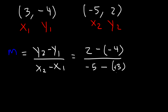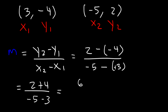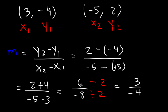2 minus negative 4 is the same as 2 plus 4. Negative 5 minus positive 3 is the same as negative 5 minus 3. 2 plus 4 is 6. Negative 5 minus 3 is negative 8. Now we need to reduce the fraction. Both numbers are even, so we can divide 6 and 8 by 2. Half of 6 is 3, half of negative 8 is negative 4. So the slope is negative 3 divided by 4.